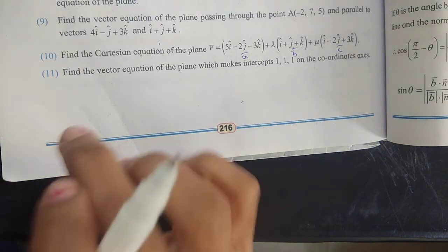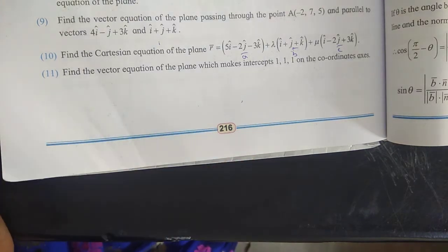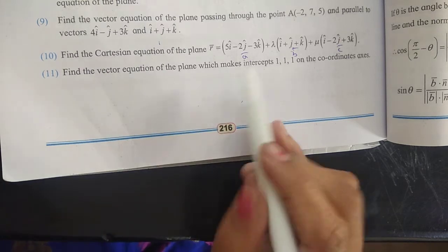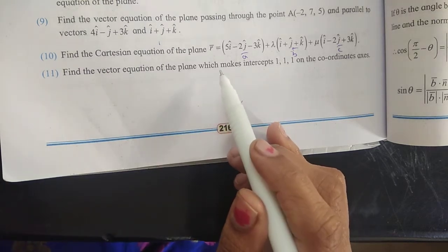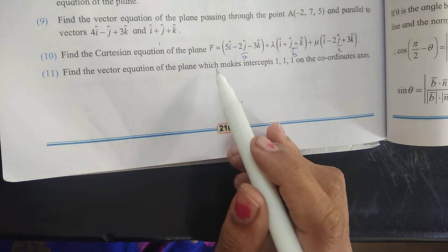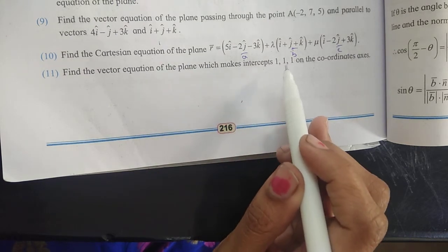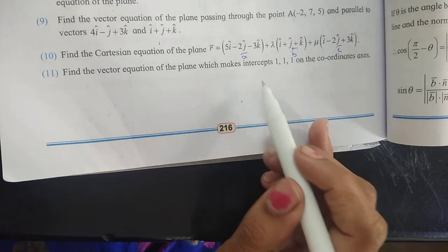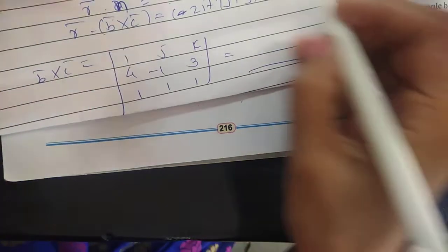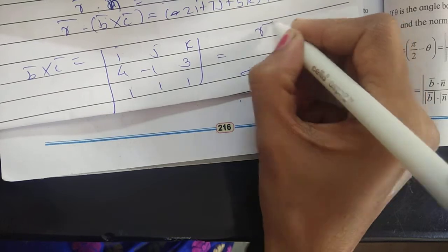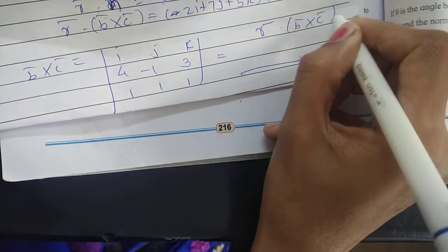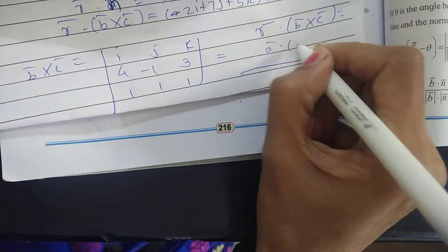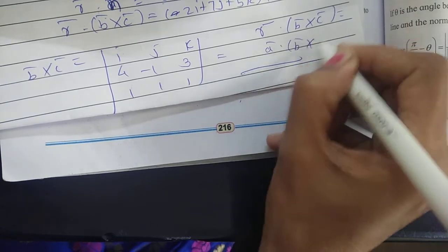Example 11: find the vector equation of the plane which makes intercepts of 1, 1, 1 on the coordinate axes. The vector equation of the plane passing through three non-collinear points A, B, C uses the formula r̄ · (AB̄ × AC̄) = ā · (AB̄ × AC̄). We have three points here — A, B, C.